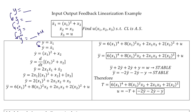Since the dimension of the system is three, we want to find a y such that when we take the first derivative there is no u, when we take the second derivative there is no u, but when we take the third derivative there is the u input signal. This basically defines how we go about choosing y virtual output signals.